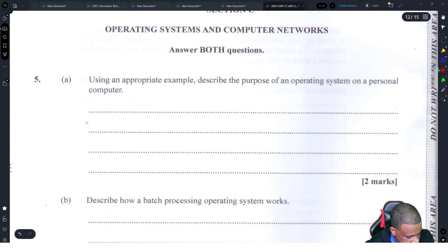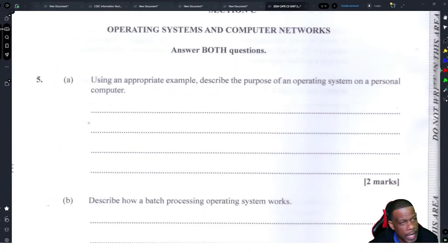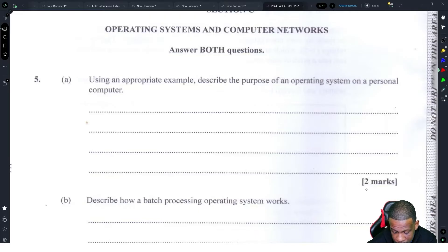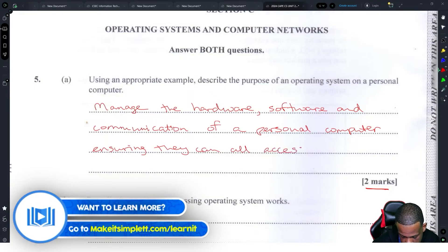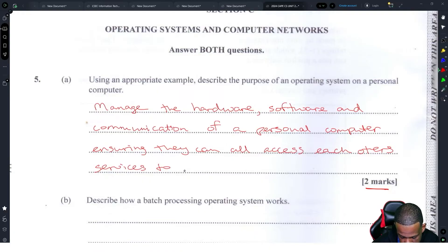Using an appropriate example, describe the purpose of an operating system. For two marks, I'm not too sure exactly what they want, maybe they want a sentence. The operating system is to manage the hardware, software, and communication of a personal computer, ensuring they can all access each other's services to accomplish tasks. Let's go with that.